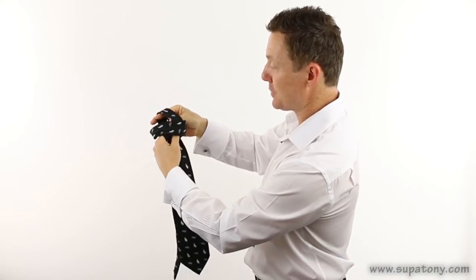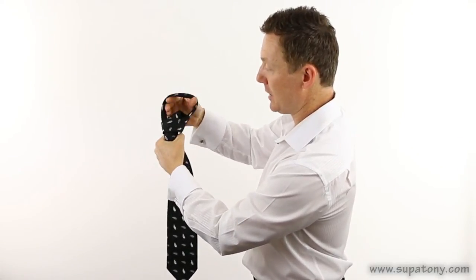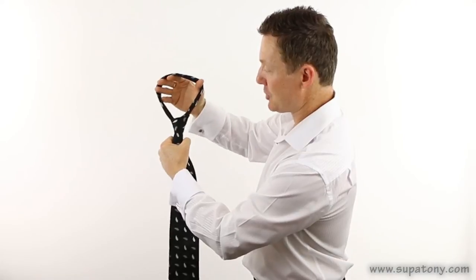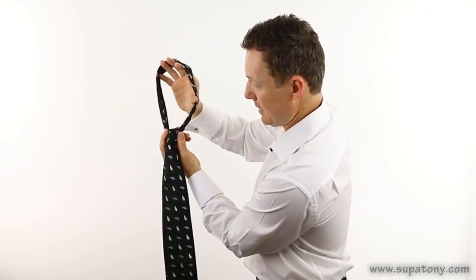Then putting your fingers through this top one, carefully spread them apart. That ties your tie knot and you've got it at the length that you wanted.